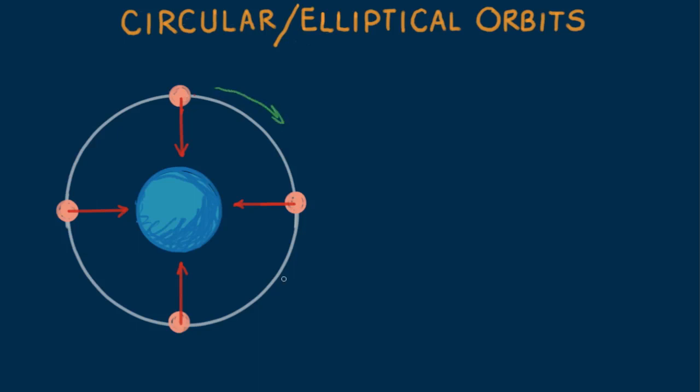Note that each of the force vectors are the same size and point to Earth's center. Same size because the satellite circles at the same distance from Earth. Note also that they're perpendicular to the orbital path. The 90-degree angle means there's no component of force along the orbital path, which further means no change in speed.